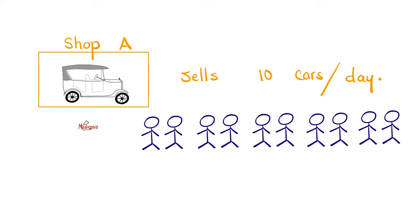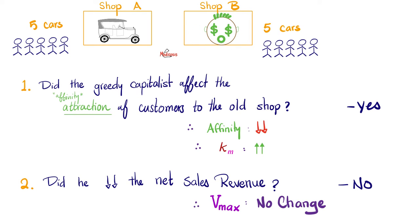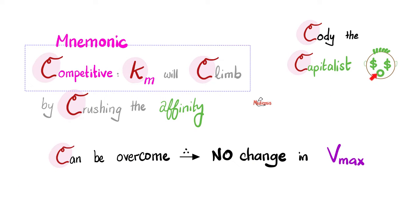To understand competitive inhibitors, think of having a shop that sells 10 cars per day to 10 different customers. Then Cody the capitalist came and opened a shop next door at the active site of doing business. Cody took 5 customers from the old shop. Did Cody affect the attraction — the affinity — of customers to the old store? Yes. Affinity went down, therefore KM goes up. But did Cody affect the net number of units sold? No — VMAX does not change. Can we overcome Cody? Yes, by providing better products and services. Since you can overcome it, there is no change in VMAX.